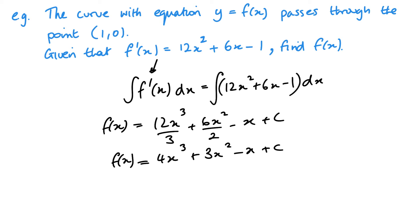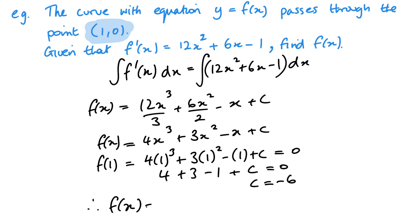Now if I go back to the question, there was a point (1,0). That means if I substitute 1 in, my y value should be 0. So f(1) = 4(1)³ + 3(1)² - 1 + C, and that must equal 0. So I've got 4 + 3 - 1 + C = 0. Here I can see 4 + 3 is 7, take away 1 is 6, I've got 6 + C = 0, so C must equal -6.